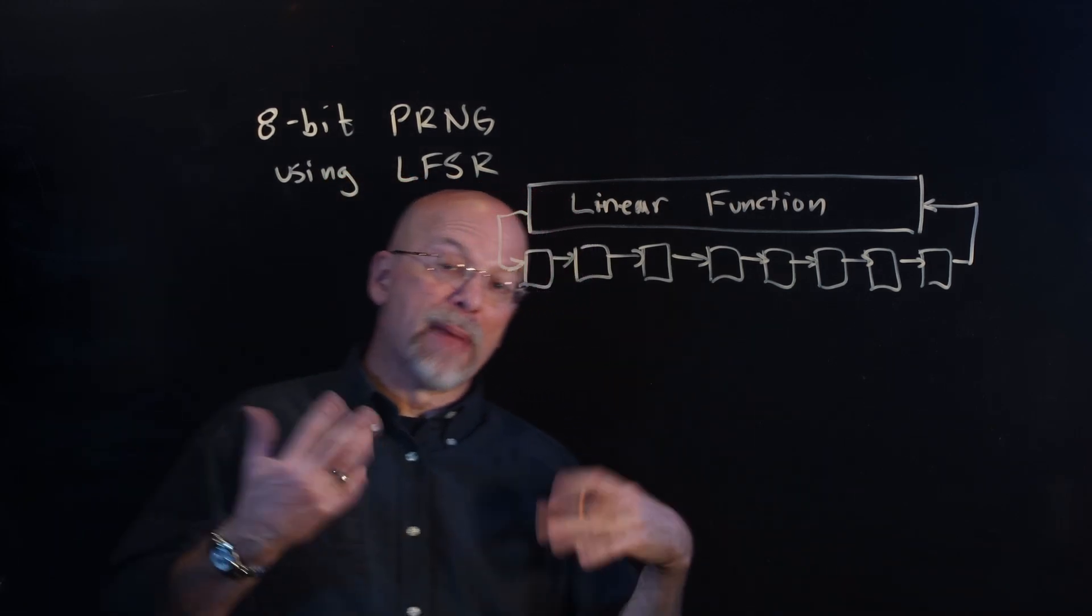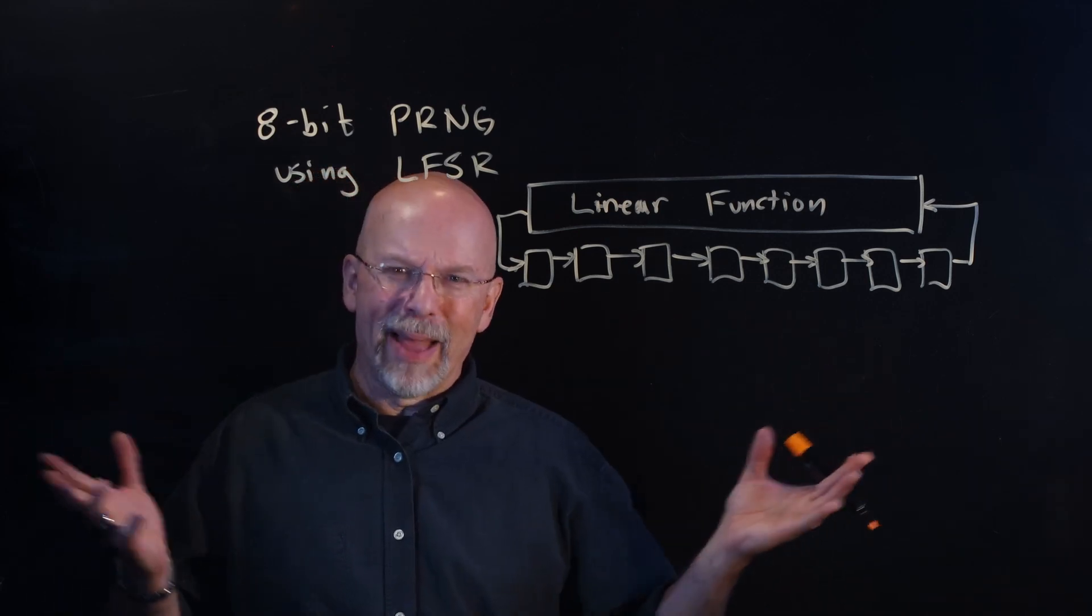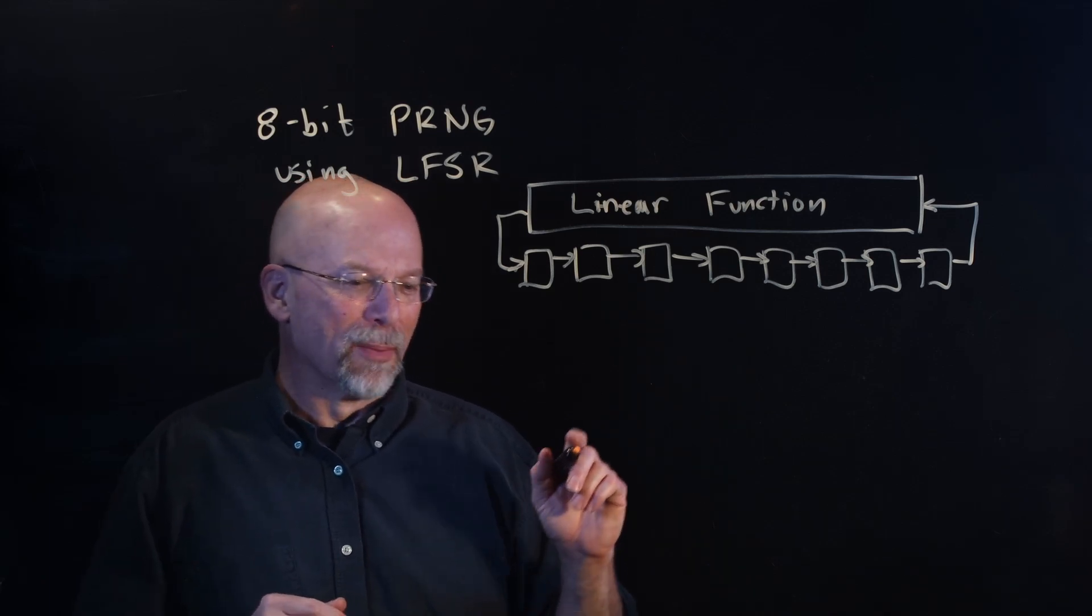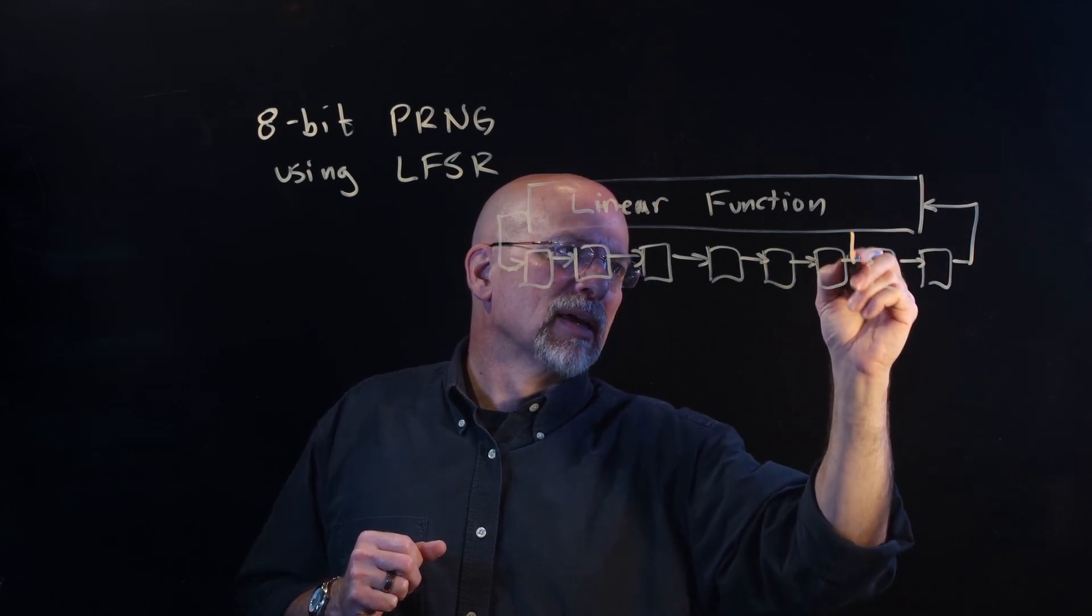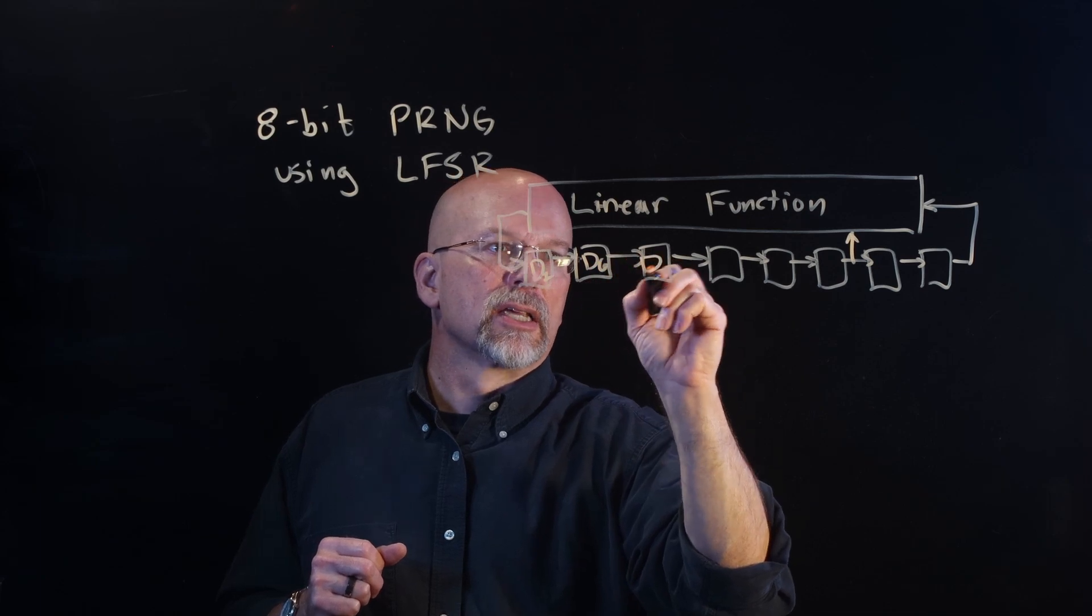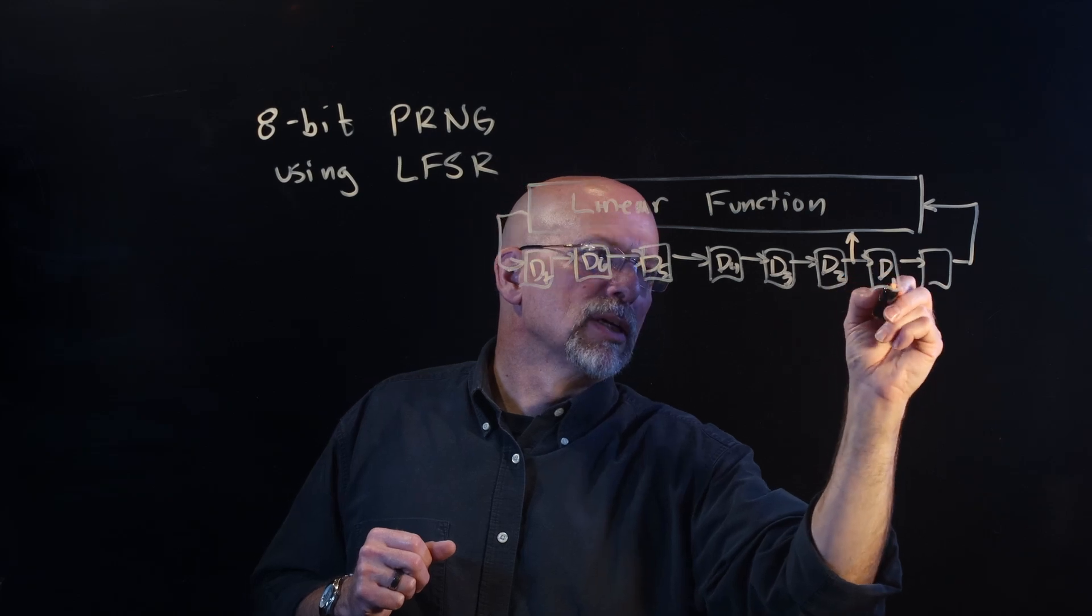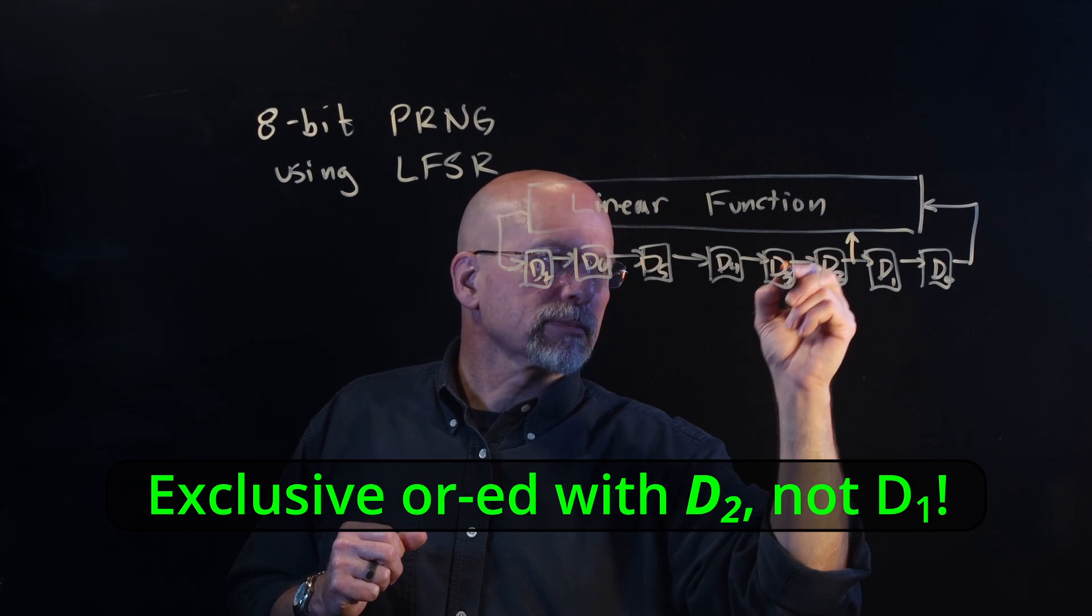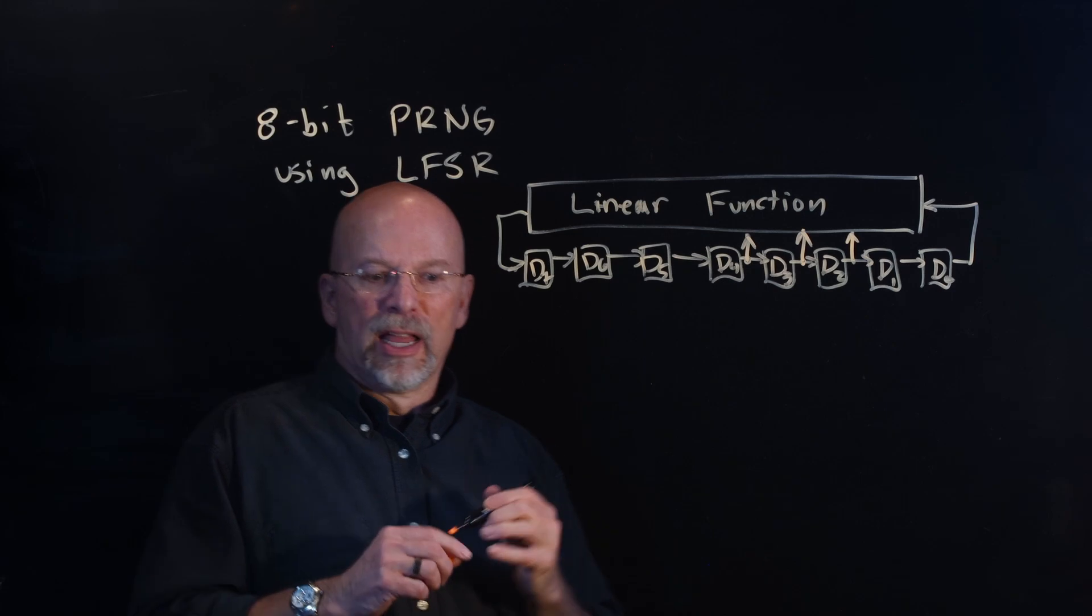What are our taps? Mathematically, we have generated what the taps need to be all the way up, well past 128-bit. But the taps for this 8-bit one, we've got one in the least significant bit. And then, we'll go D7, D6, D5, D4, D3, D2, D1, D0. So, D0 exclusive ORed with D1, exclusive ORed with D3, exclusive ORed with D4. There you go.